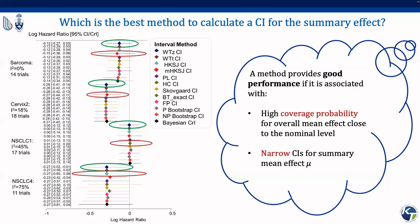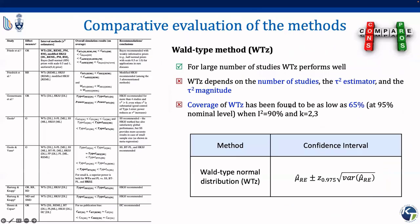To select among the different methods, we need a CI with high coverage probability for the overall mean effect close to the nominal level — the number of times the true mean effect is included in the calculated CI — and a method with narrow CIs. Simulation study findings suggest that the Wald-type method with the Z-test and normal distribution, already implemented in REVMAN, has considerably low coverage unless the size and number of studies are large and heterogeneity is low. The Wald-type method performs well with a large number of studies, and its coverage can be as low as 65% when heterogeneity is high and only two or three studies are available.